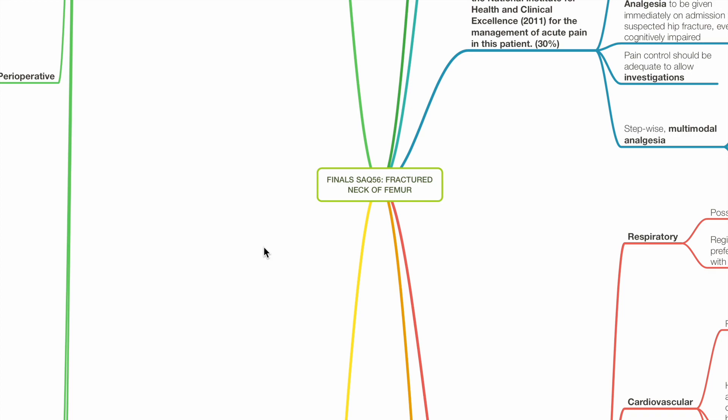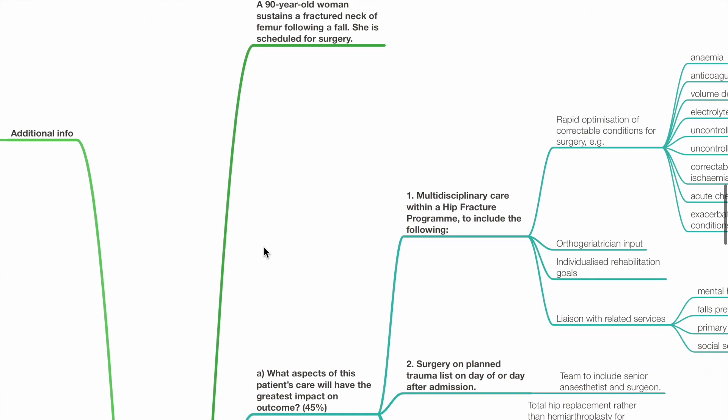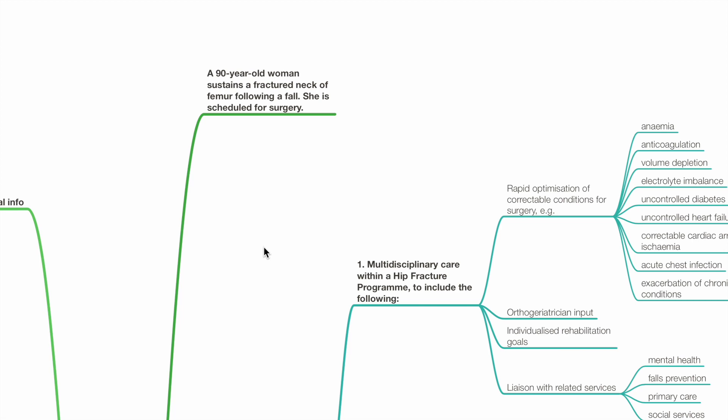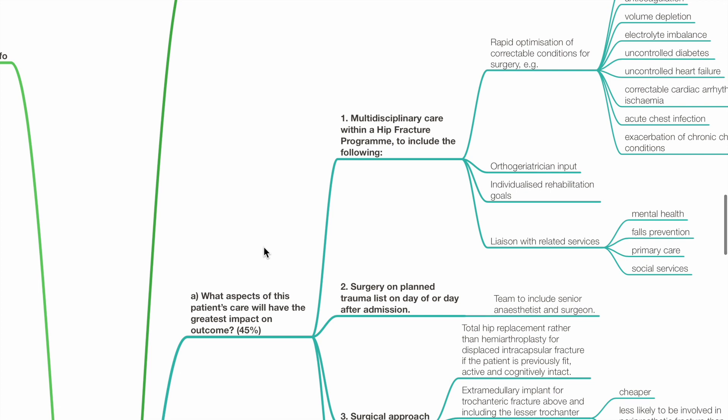Finals SAQ 56, Fractured Neck of Femur. A 90-year-old woman sustains a fractured neck of femur following a fall. She is scheduled for surgery. A. What aspects of this patient's care will have the greatest impact on outcome?